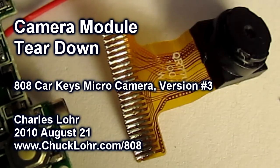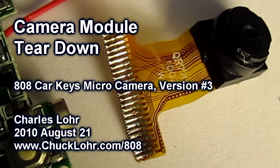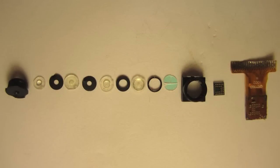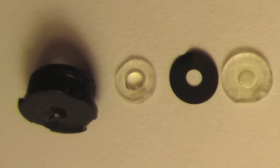This is a destructive teardown of the camera module of the 808 Car Keys Micro Camera Version 3. These are the 13 parts making up the internal camera module.